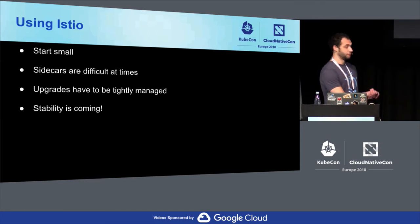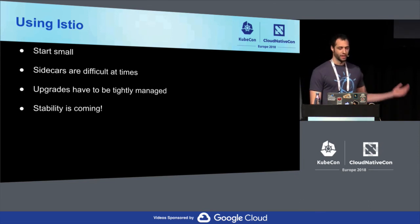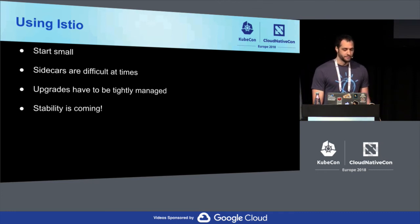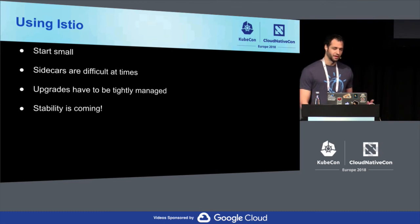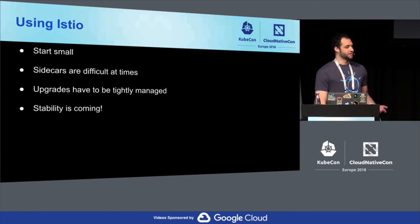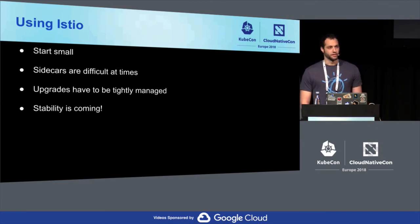We're actively working with the Istio community on the 0.8 support. Some advice if you're looking at using Istio: start small. Ingress is a very easy way to get started — you can get the metrics. Sidecars are often difficult; there's a lot of things you have to think about by adding a sidecar. If you're running a current version of Istio, your upgrades have to be tightly managed. Up until the 0.8 release, a lot of functionality was in flux. This 0.8 release is really going to nail down what we want to offer for the 1.0 release, which should be coming in a couple months. Stability is coming, and you're definitely not late to the Istio party.